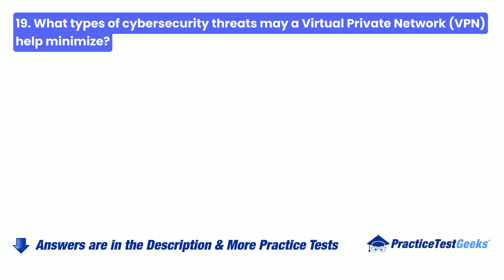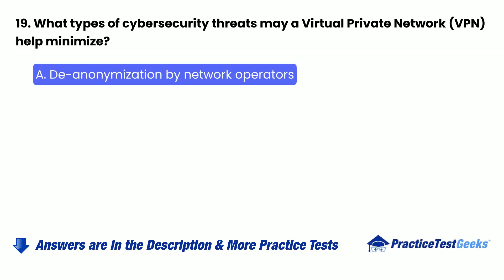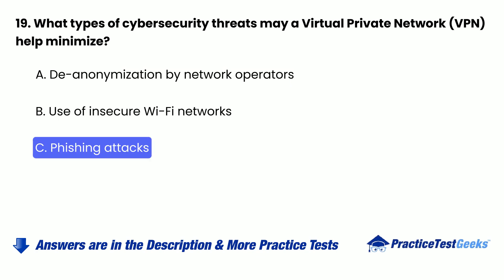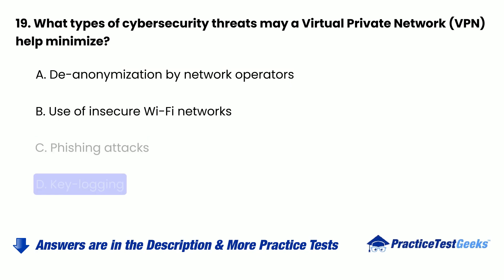Question 19: What types of cyber security threats may a virtual private network help minimize? a. De-anonymization by network operators. b. Use of insecure Wi-Fi networks. c. Phishing attacks. d. Keylogging.